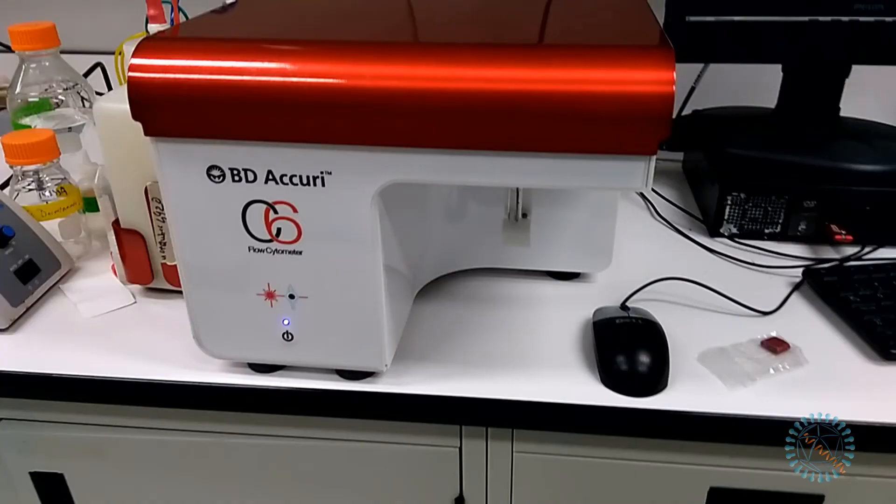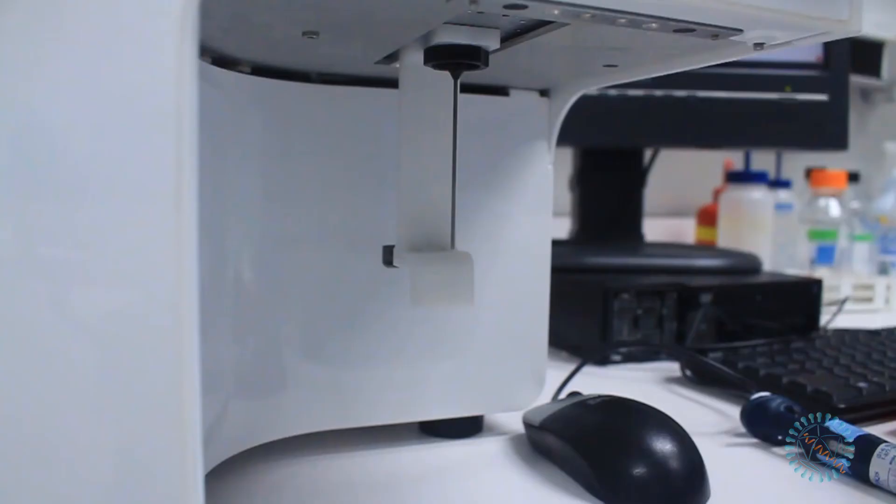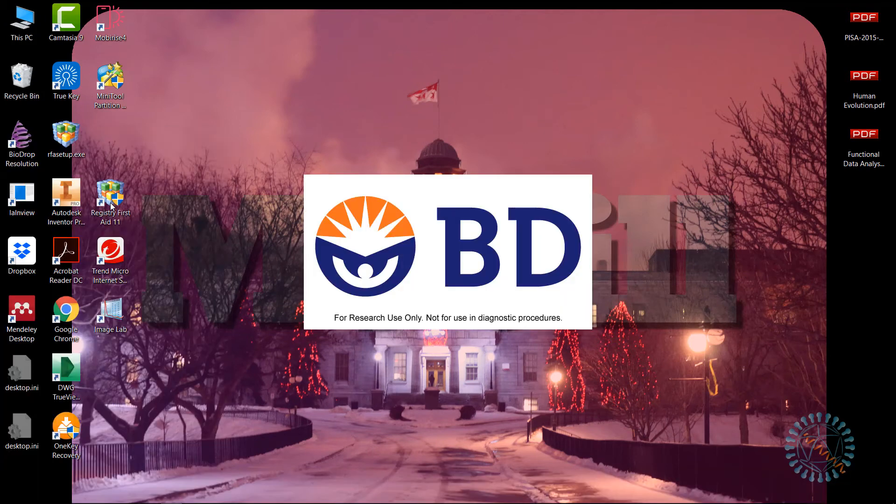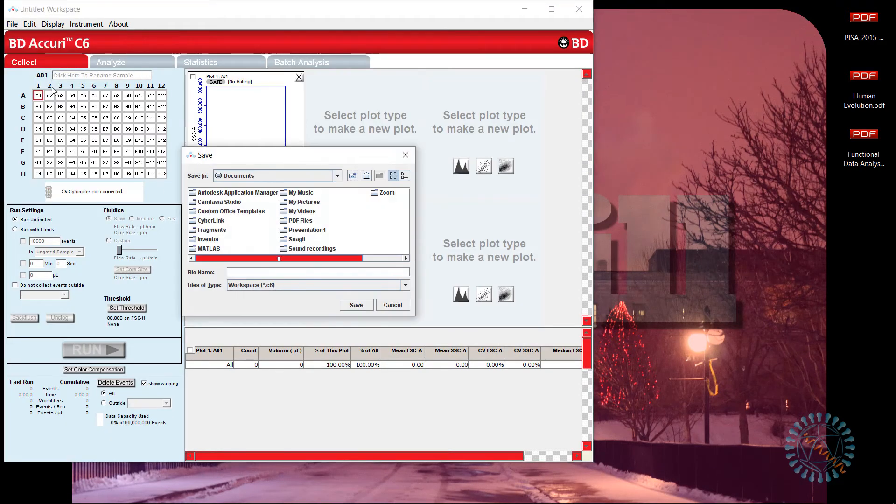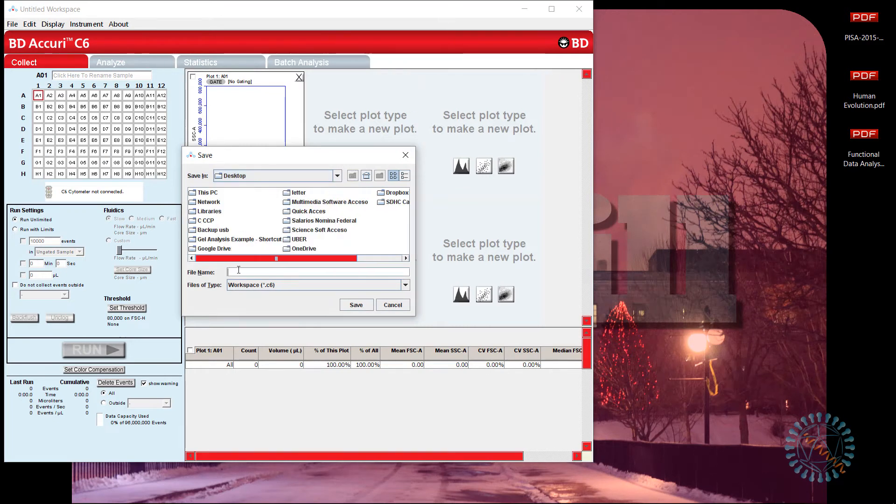Once we have turned on the equipment, it will be ready to go after 15 to 20 minutes. This waiting time is important for the laser to warm up and the fluidic and electronic systems to be stable. In the meantime, we will open the software that controls the data acquisition from the flow cytometer and we will create a new file and set up our workspace.